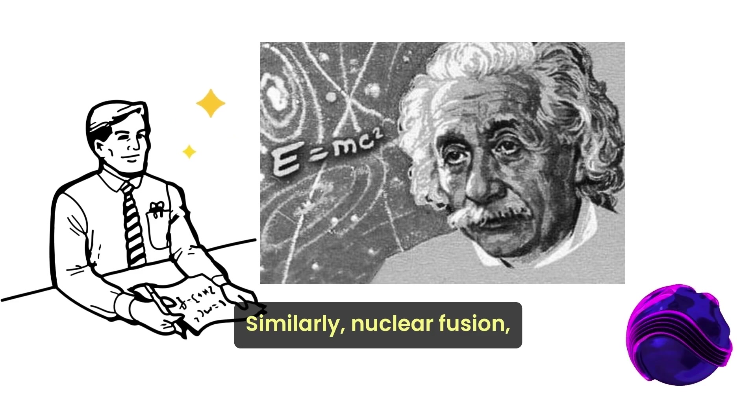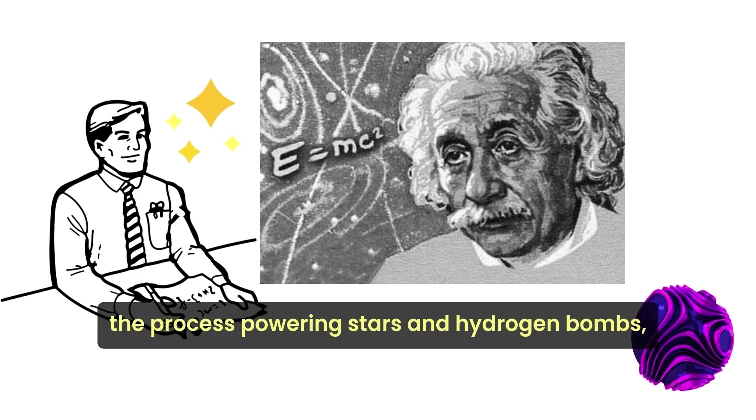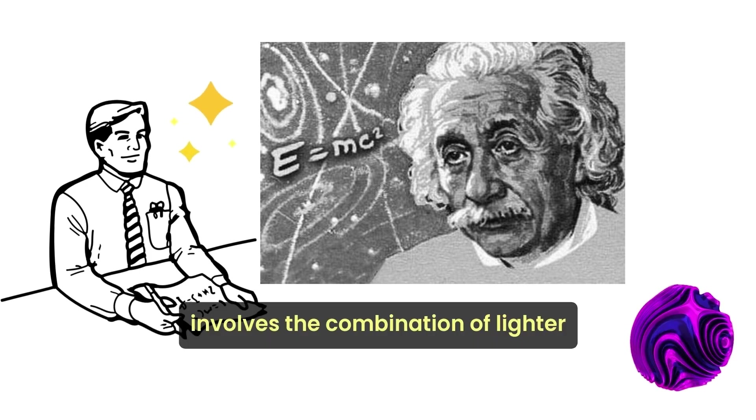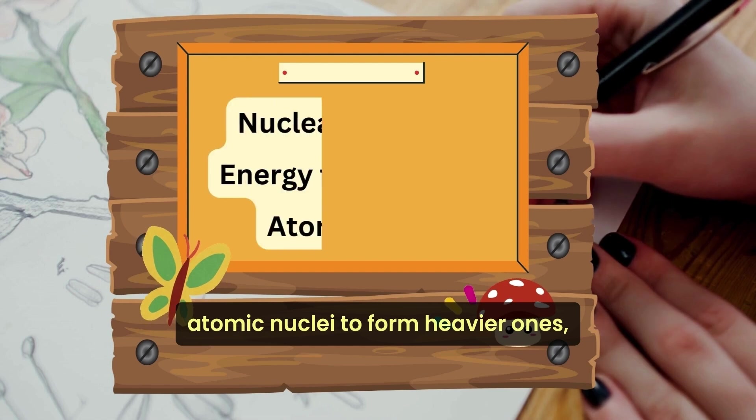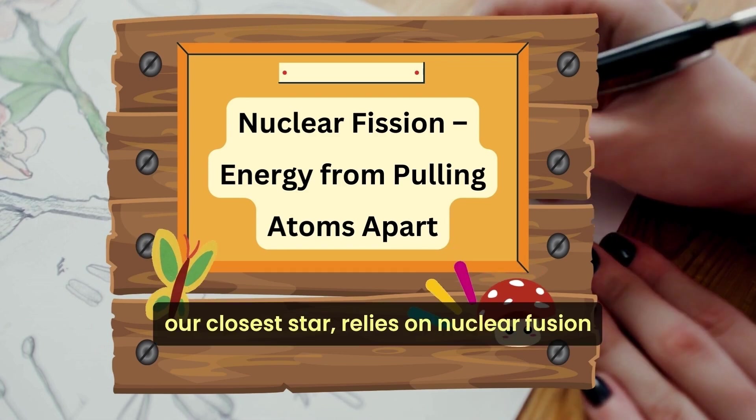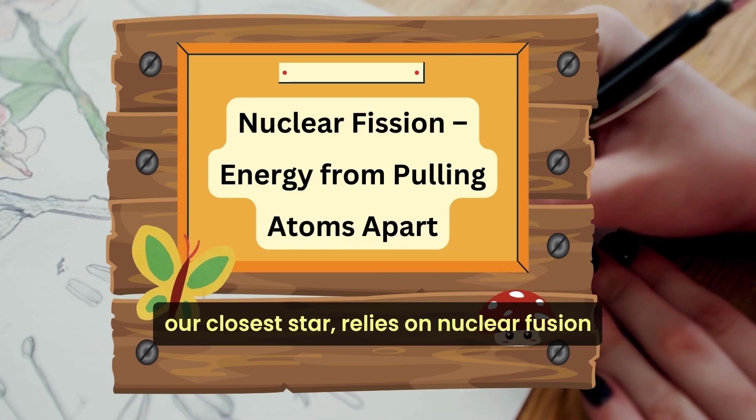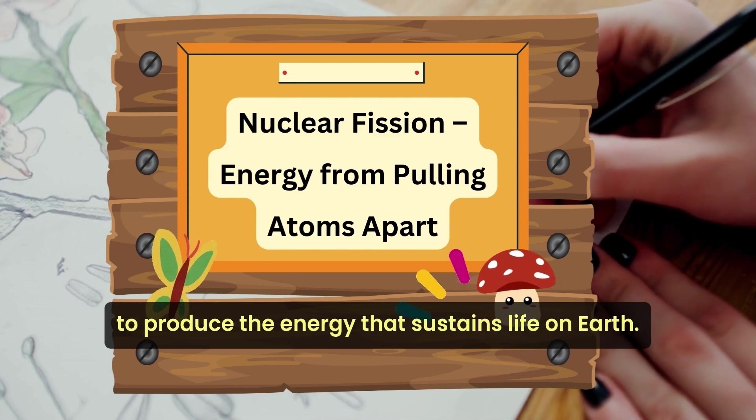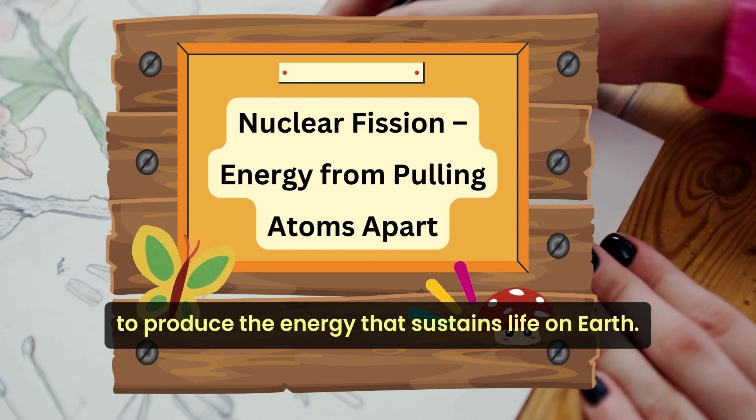Similarly, nuclear fusion, the process powering stars and hydrogen bombs, involves the combination of lighter atomic nuclei to form heavier ones, releasing energy in the process. The sun, our closest star, relies on nuclear fusion to produce the energy that sustains life on Earth.